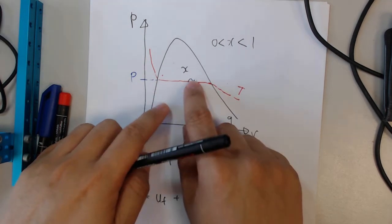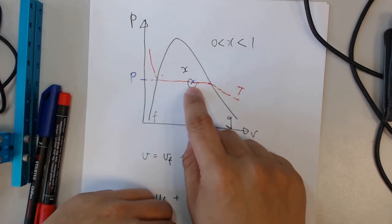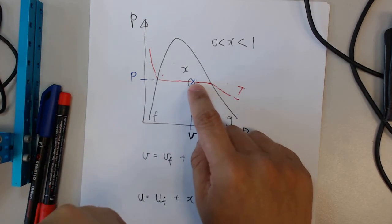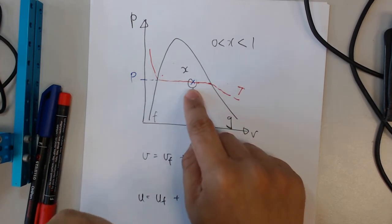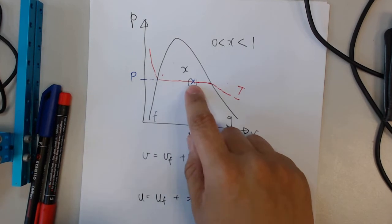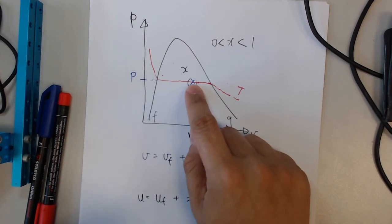And if you happen to be somewhere in the middle, somewhere over here, take for example, you are going to have a certain dryness fraction. So let's say for this particular case, it should be about, since it's closer to G, it should be more than half. So let's say it's about 0.7.